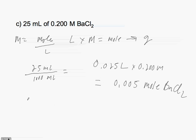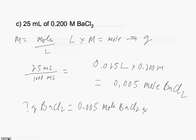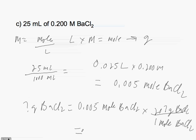We then calculate how many grams of BaCl₂ equals 0.005 moles of BaCl₂. We know that for every 1 mole of BaCl₂ there are 207 grams. When we do the math, this equals 1.035 grams of BaCl₂.